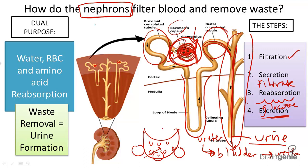To recap, the two functions of the nephron are: one, to remove waste; and two, to reabsorb nutrients like water and amino acids. The four jobs of the nephron are filtration, secretion, reabsorption, and excretion.